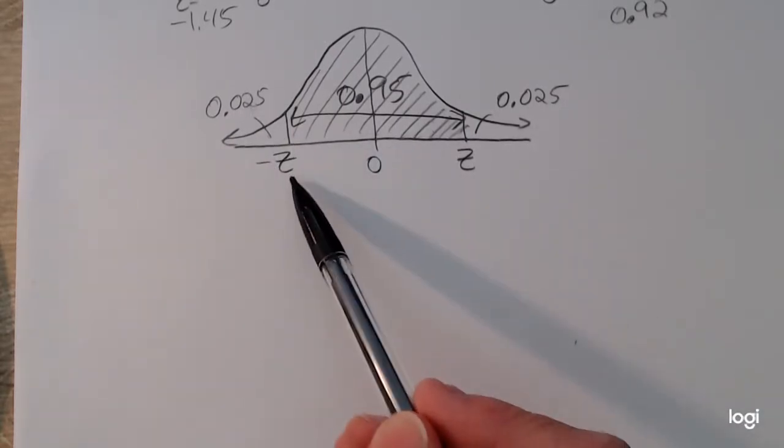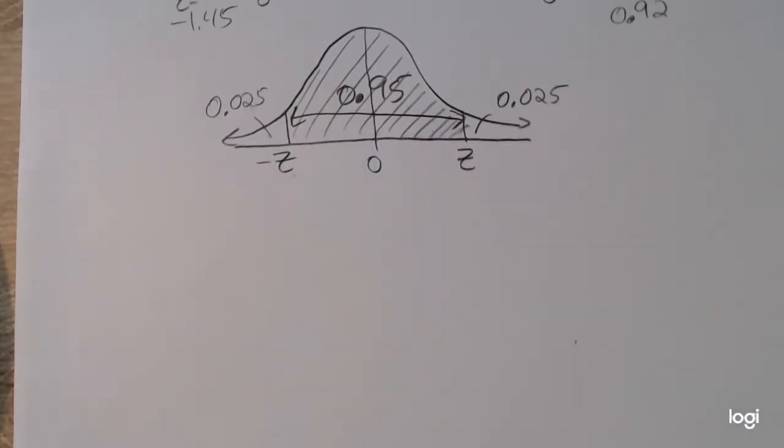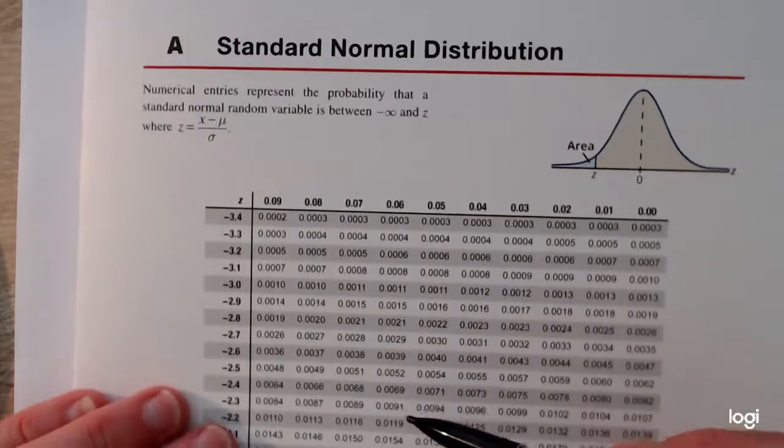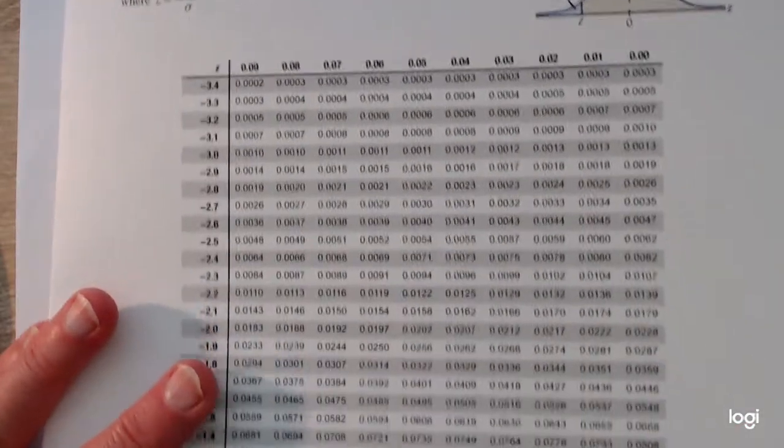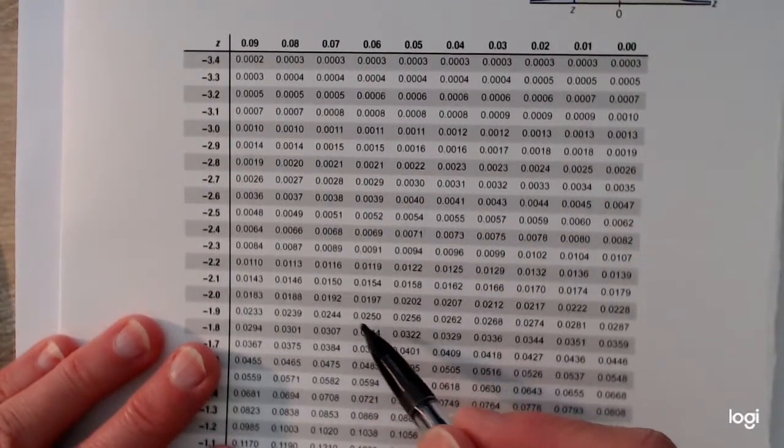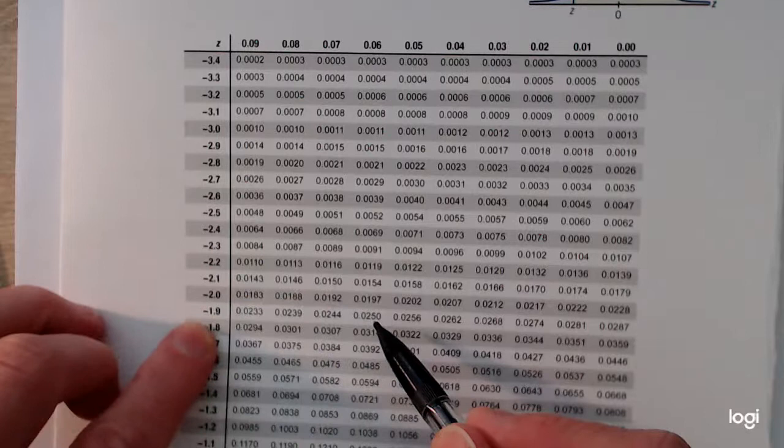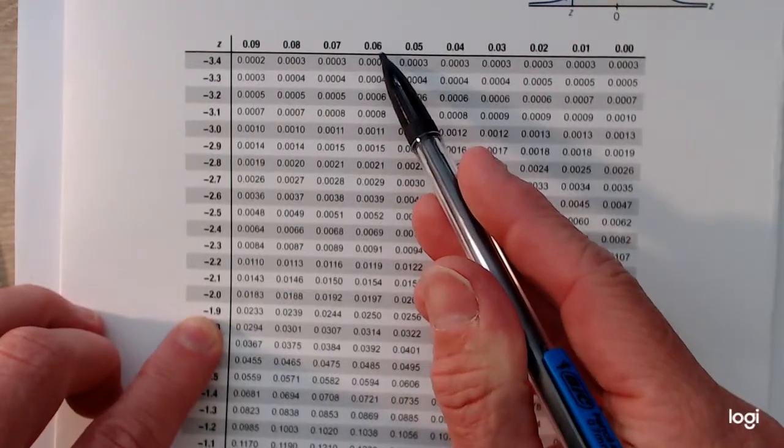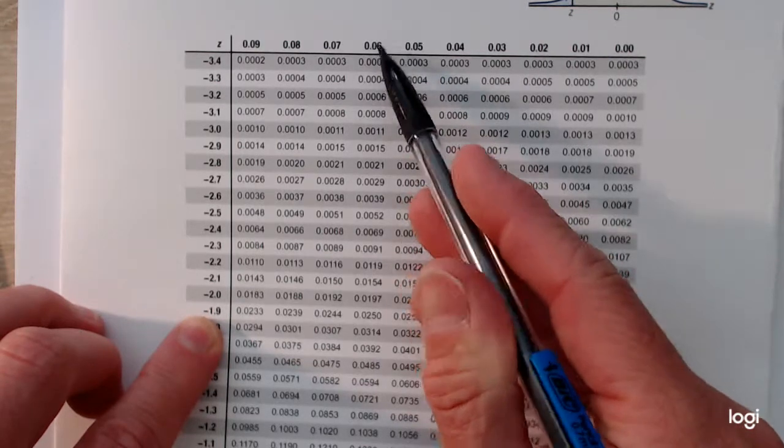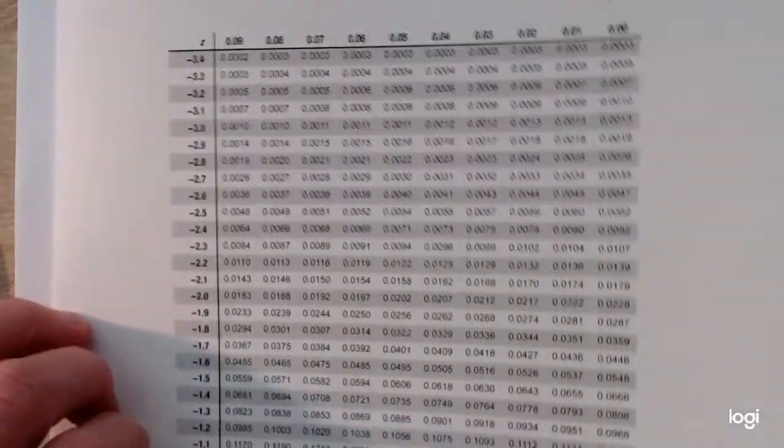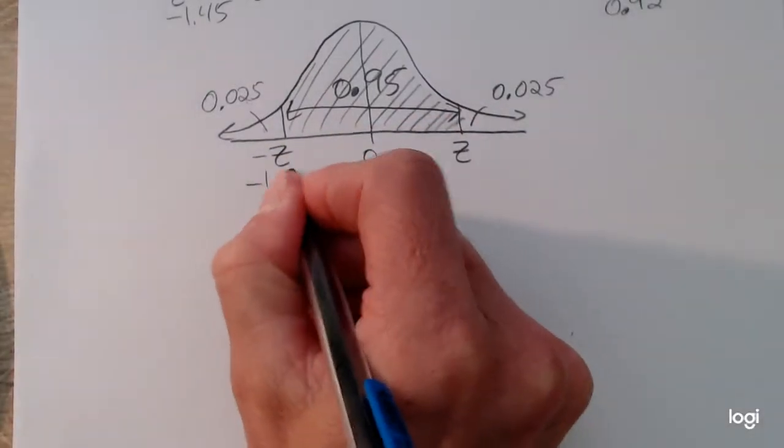So again, this z-score is negative. I need to go to the page that reads for negative z-scores. And I need to read in the body of the table as close as I can get to 0.025. And here it is. So 0.025. Reading to the left, I have negative 1.9, and then 0.06 rounding to the nearest hundredths. So this table only goes to the hundredths place. So this negative z-score is negative 1.96.